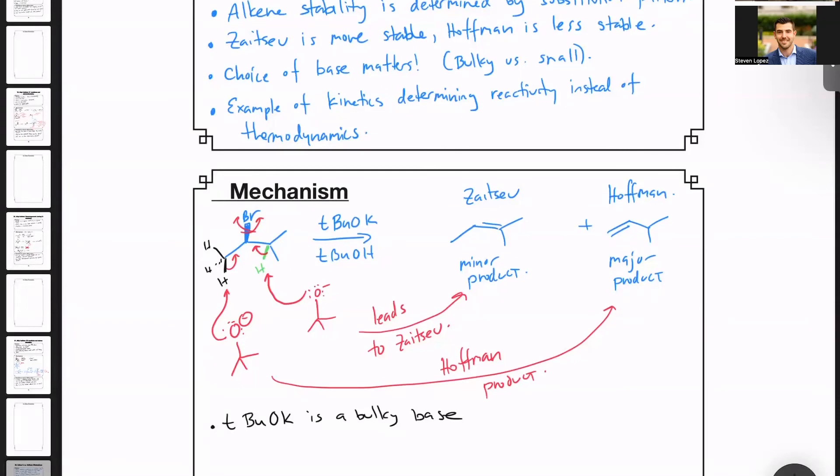So since the reaction involving the less sterically encumbered hydrogen is lower, that means that reaction is going to be notably faster than the reaction involving the green hydrogen. So the steric effects in the transition states are controlling the reaction rates and ultimately the product ratios.